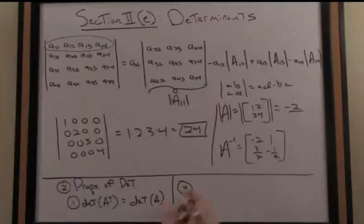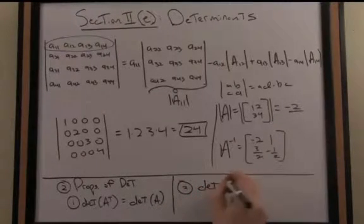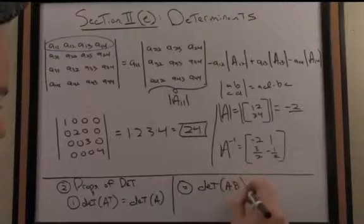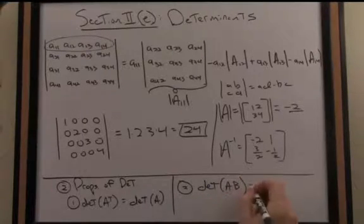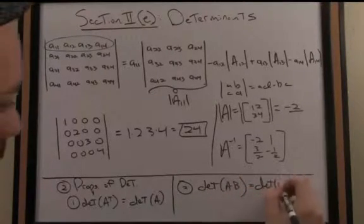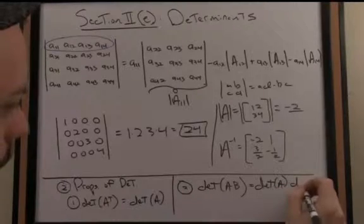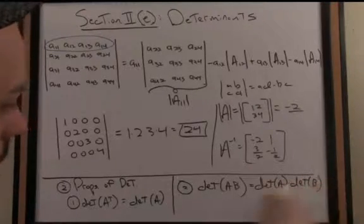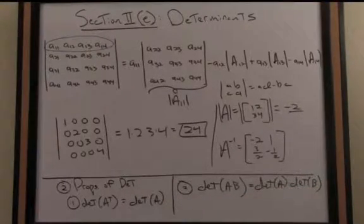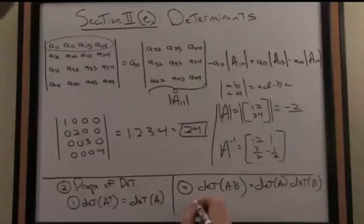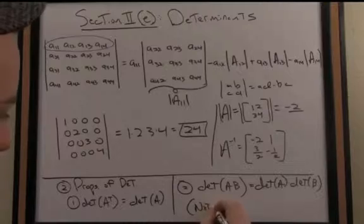The second extraordinarily useful property for computing determinants is this kind of surprising property in some ways. The determinant of a product of two matrices is equal to the product of the determinants of those matrices, respectively. In other words, the determinant of A times B is equal to the determinant of A times the determinant of B. I just want to remind you, do note, as we mentioned previously,